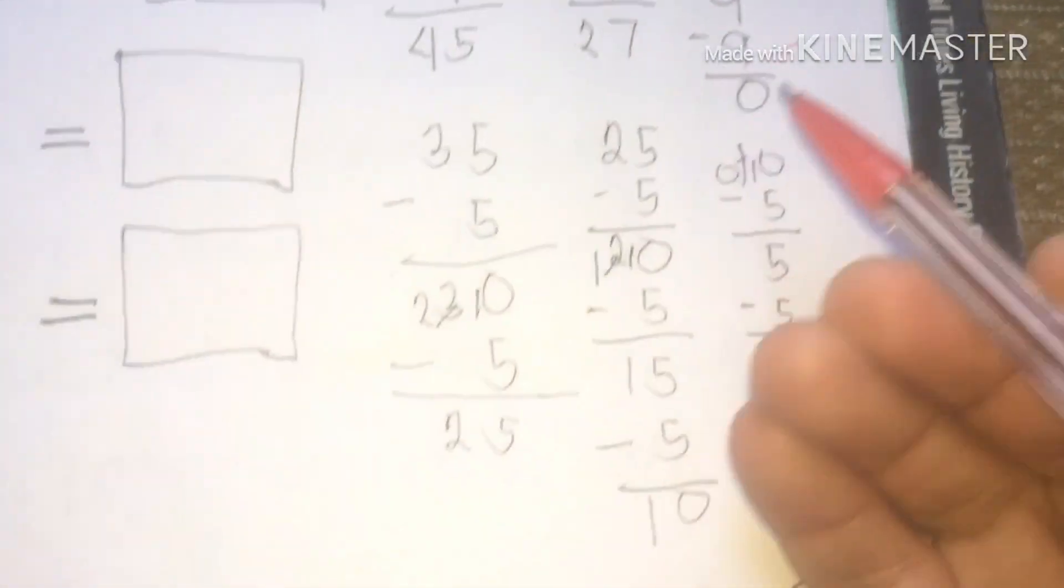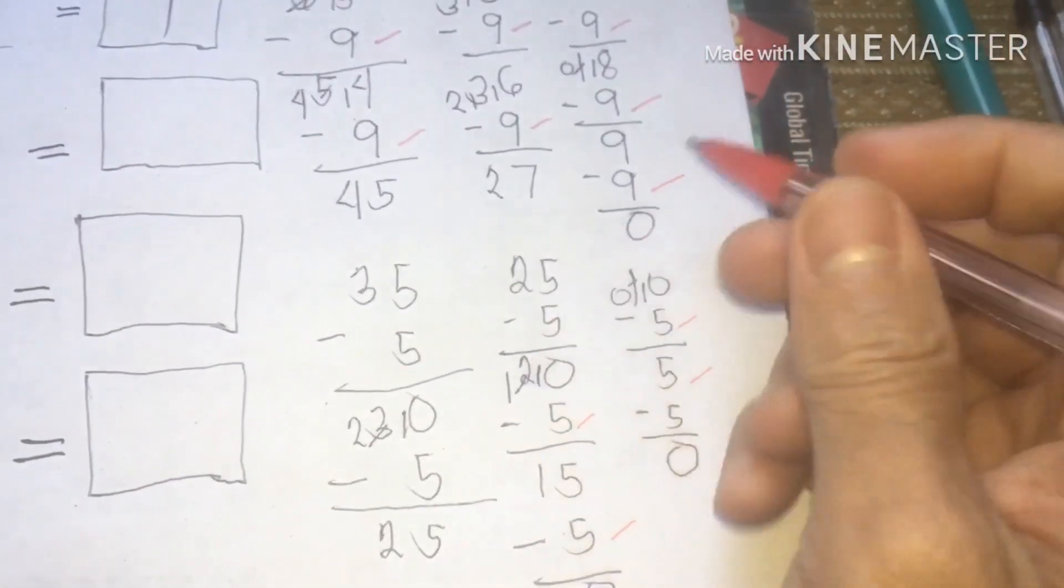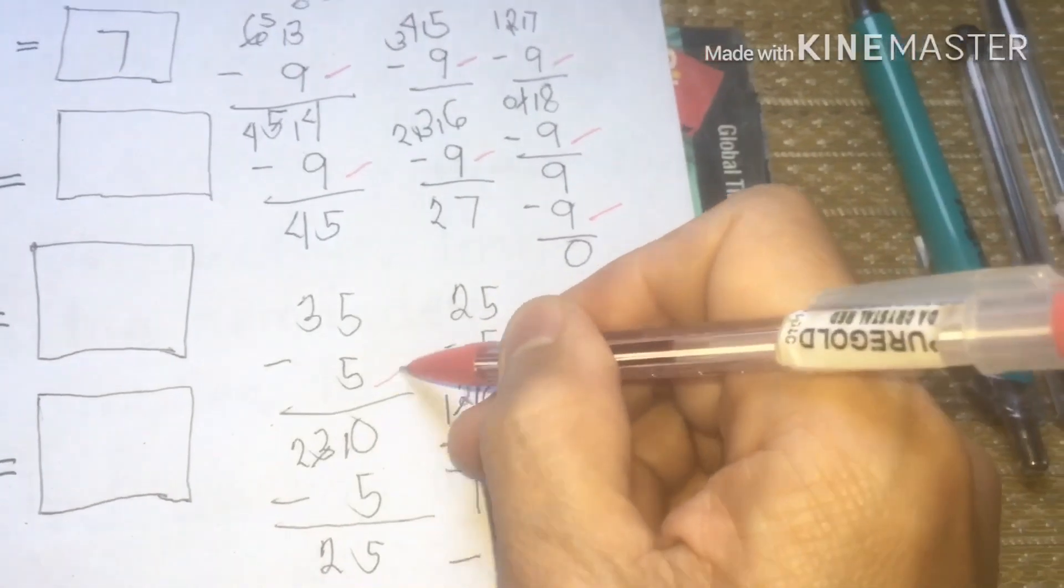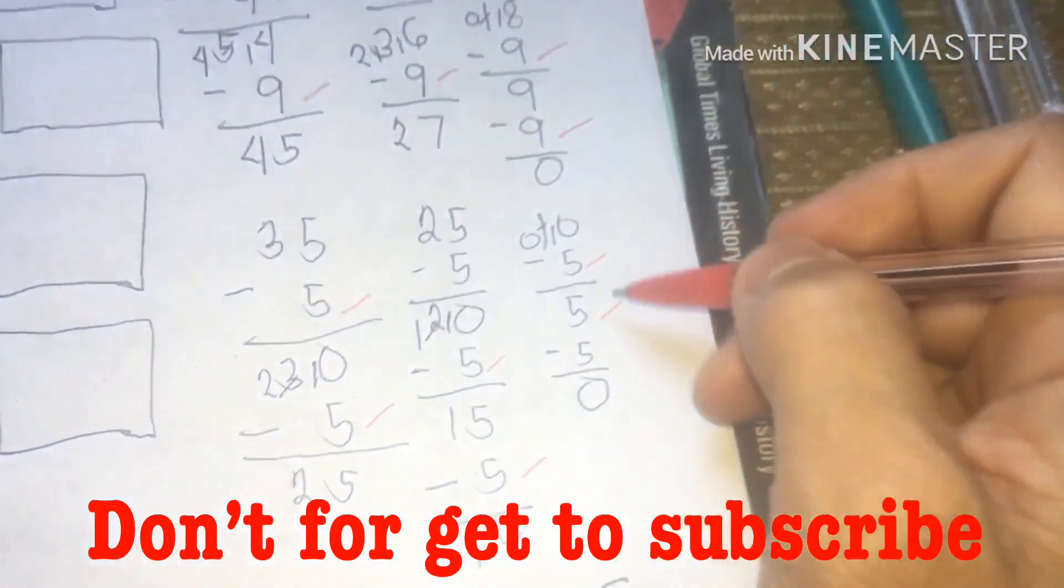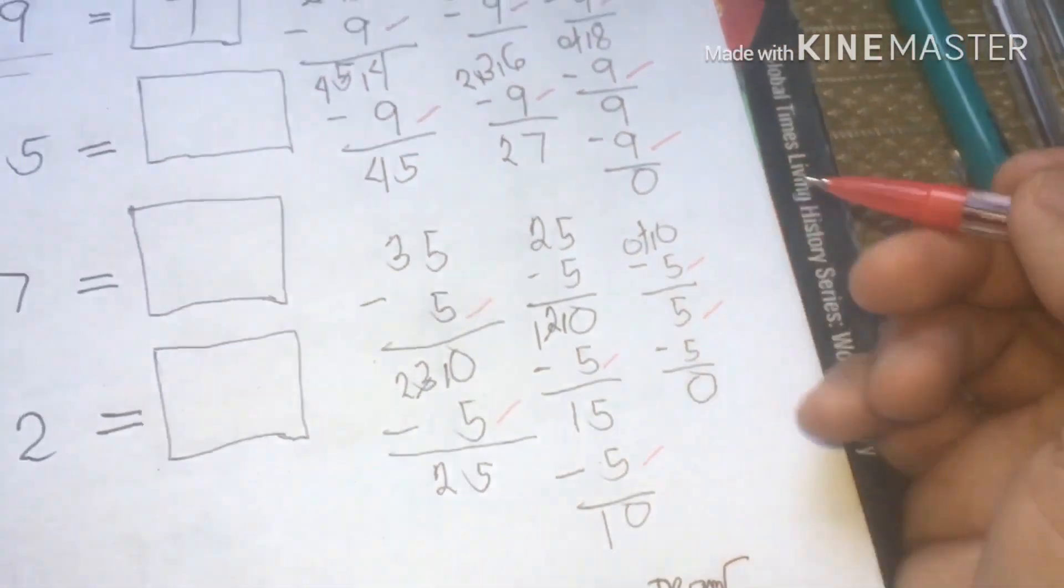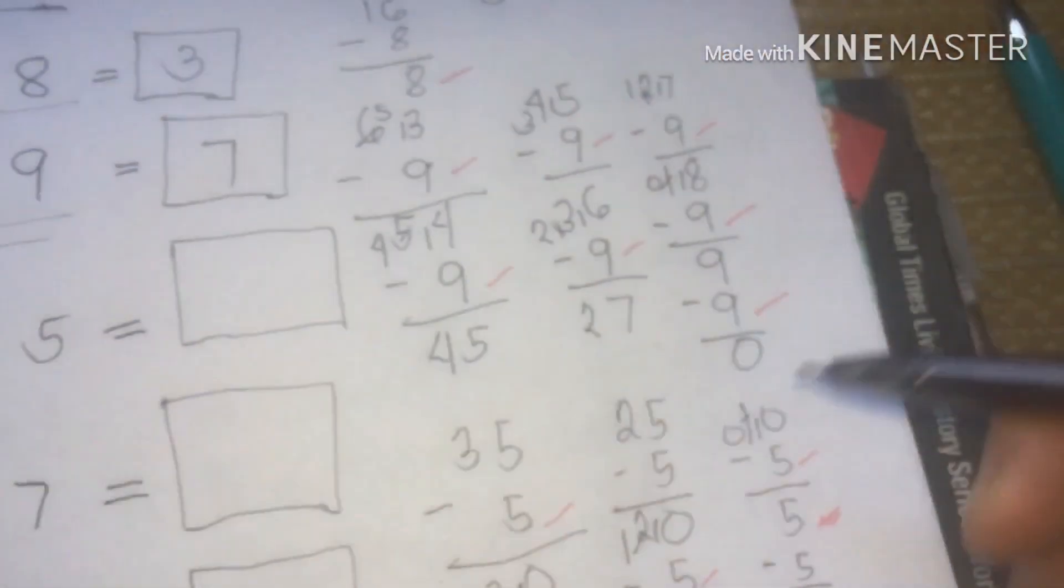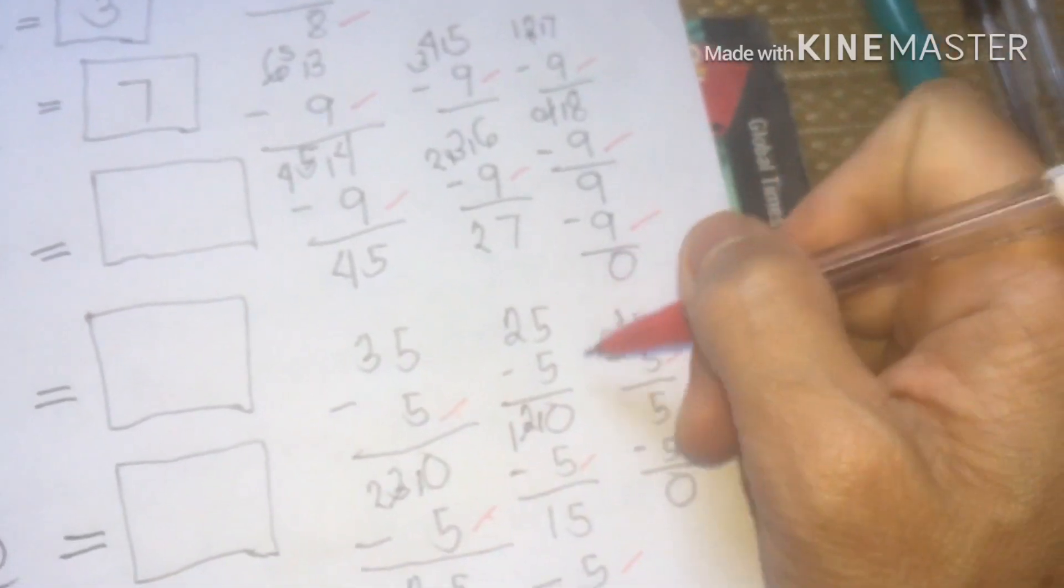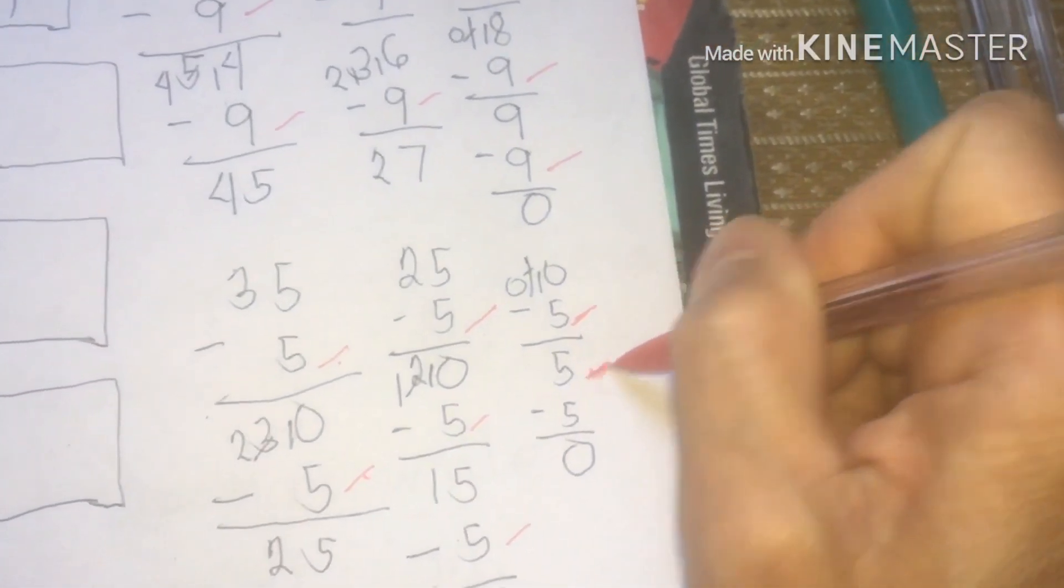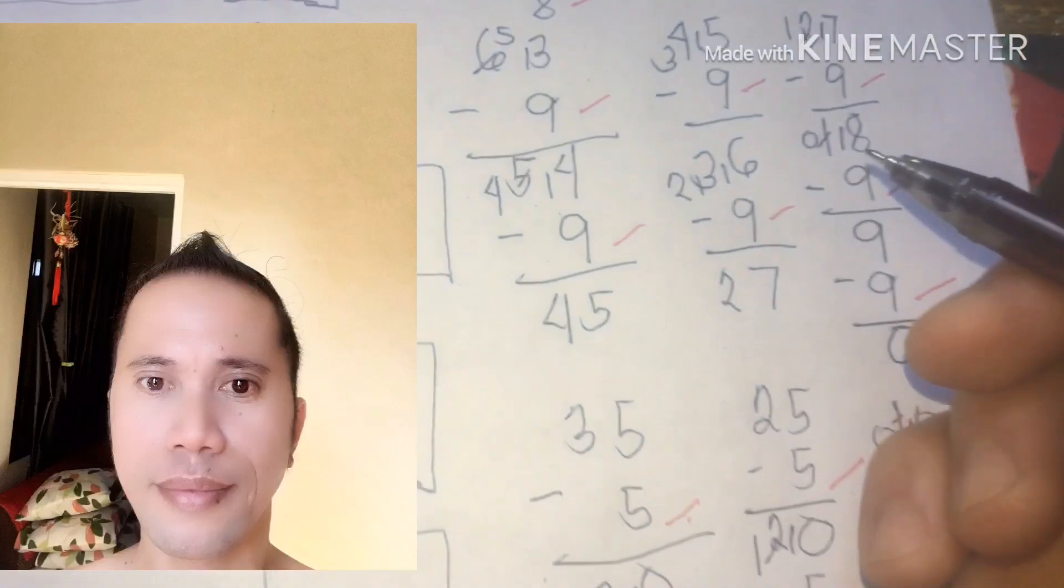35 divided by 5. Let's count. 1, 2, 3, 4, 5, 6, 7. Therefore our answer 35 divided by 5 is 7. So next 35 divided by 7. So actually 35 divided by 7 is reversible. We're going to write here 5.